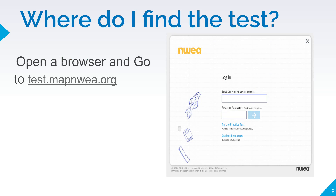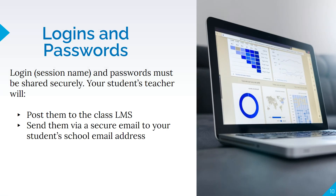Where do we find the MAP test? Open a browser and go to test.mapnwea.org. That will bring you to a login screen. The session name and password must be shared securely — your student's teacher will either post them to the class LMS or send them via a secure email to your student's school email address.